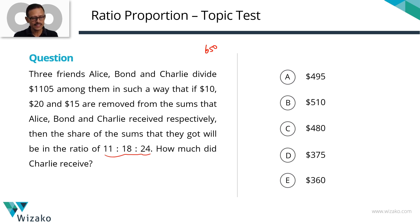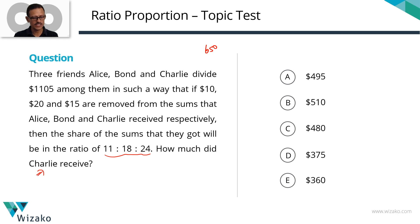After removing these sums, if we check out how much money they have, that is going to be in the ratio of 11:18:24. What we need to compute is how much did Charlie receive?